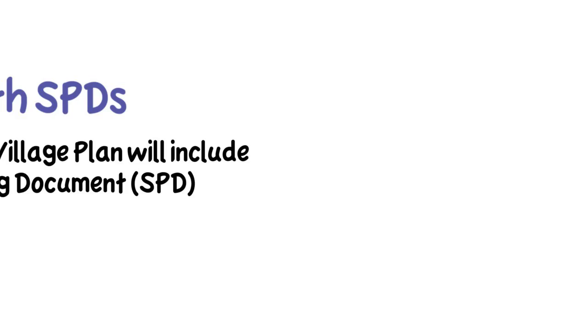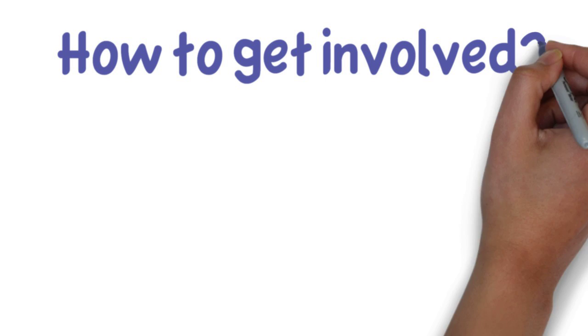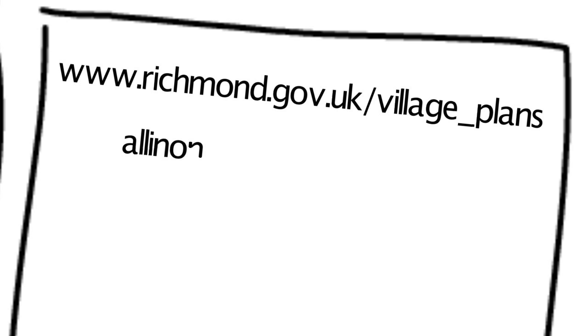At the heart of the process is an ambition that local people are involved in the discussions about their village plan. You can get involved by finding out a little more online, taking part in a consultation, attending an event, or inviting a community links officer to your group meeting.